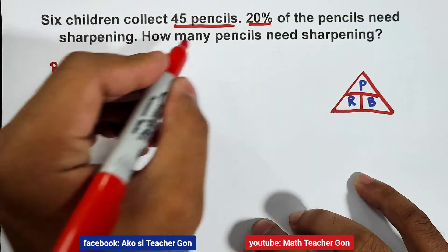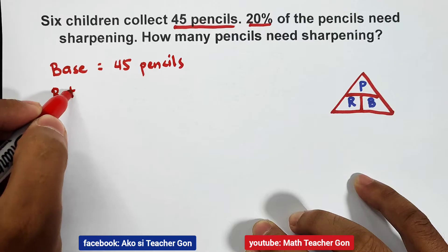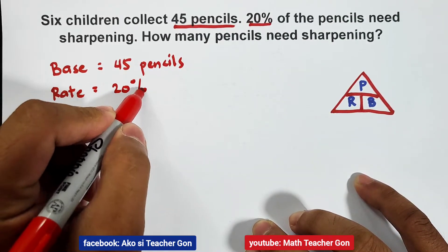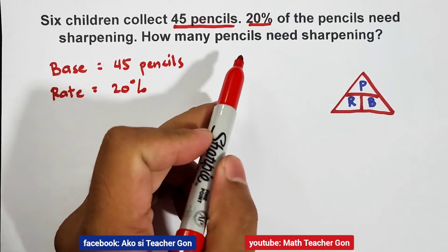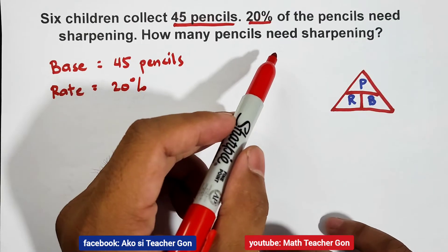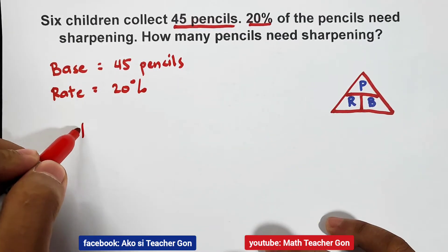Next, the 20% represents rate because it has a percentage symbol. So we have 20%. So here, how many pencils need sharpening? That is the percentage. Meaning, we will calculate for the P.